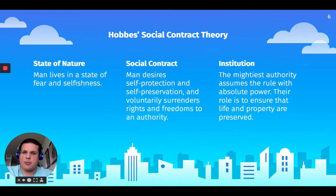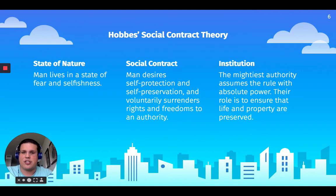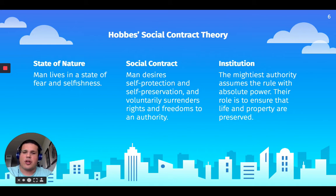In terms of Hobbes' social contract theory, we need to talk about the state of nature. When we begin with the state of nature, man is going to live in a state of fear and selfishness — there's going to be chaos, people are going to be fighting and stealing from each other. And so they're going to be forming a social contract because they want self-protection and self-preservation, voluntarily surrendering their rights to an authority figure so that we create a system of government.